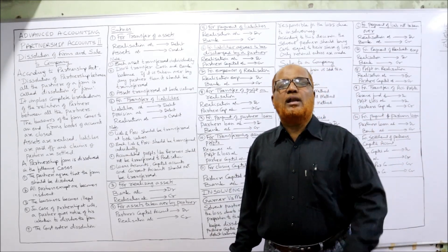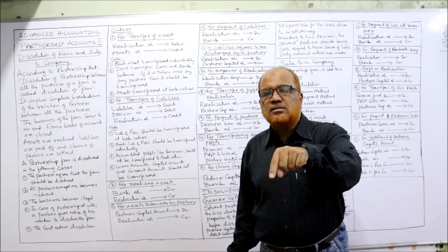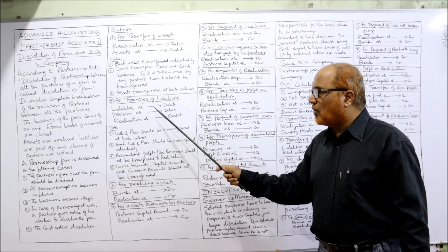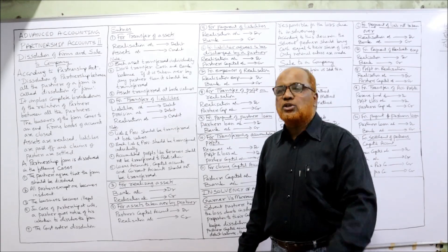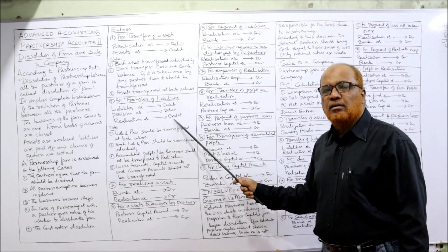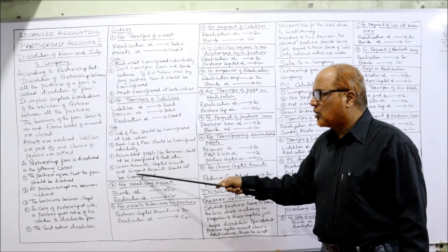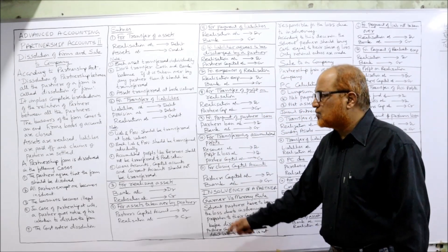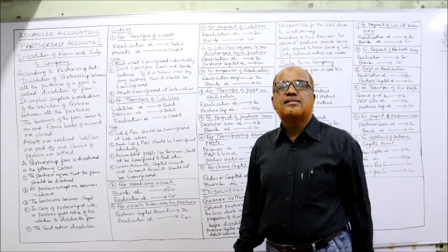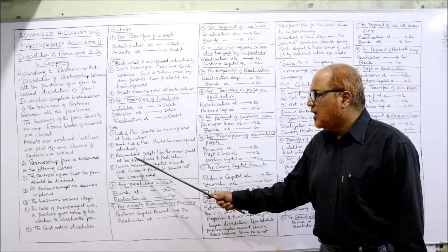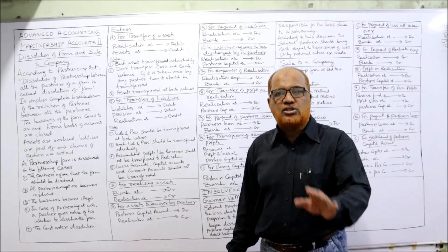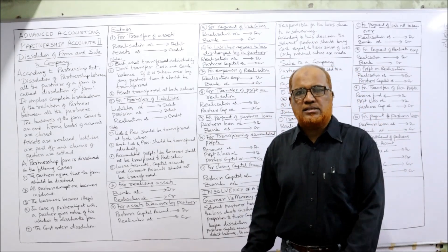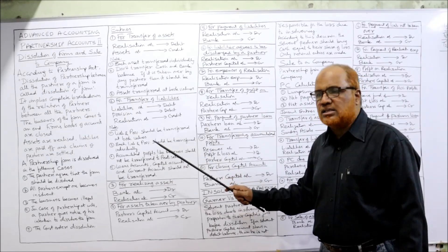Second entry: transfer the liabilities to Realization. Liabilities show a credit balance; to close them, debit liabilities and credit Realization. Also debit any provision for doubtful debts and credit Realization. Key points to remember: liabilities and provisions should be transferred at book values. Each liability and provision should be transferred individually. Accumulated profits like reserves or profit and loss account balance should NOT be transferred to Realization. Loans account, current account, and capital accounts of partners should also NOT be transferred to Realization — only assets and liabilities go to Realization.